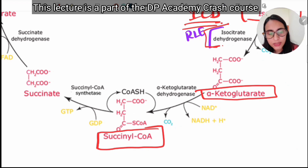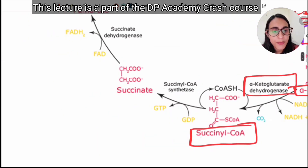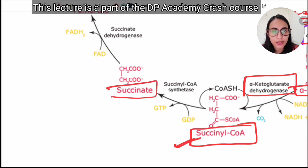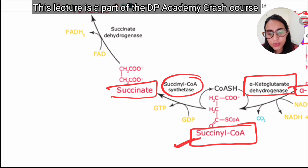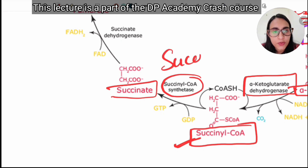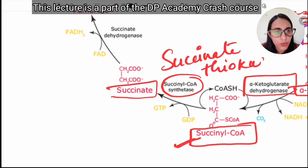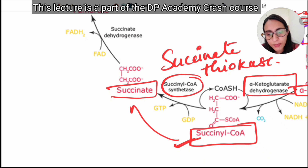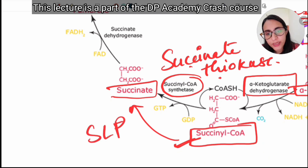Alpha-ketoglutarate is converted to succinyl-CoA in the presence of alpha-ketoglutarate dehydrogenase enzyme. Succinyl-CoA then gives succinate with the help of succinyl-CoA synthase, also called succinate thiokinase. This step — succinyl-CoA to succinate — is a substrate-level phosphorylation, which you must remember.